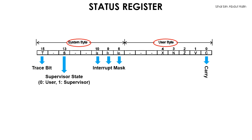Bit 1 is the overflow flag. Its value changes to 1 when an arithmetic operation results in an overflow. An overflow is defined as a number value that is out of the range of numbers that can be represented by a certain number of bits for an assigned number. We will discuss this topic in part 3 of this video series.